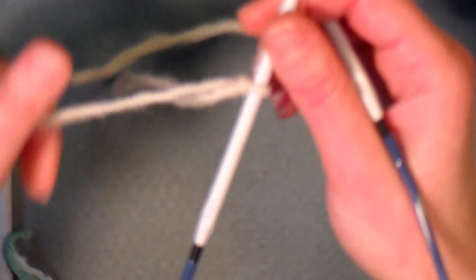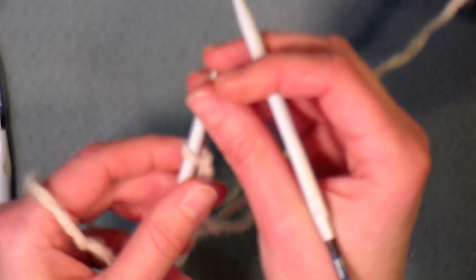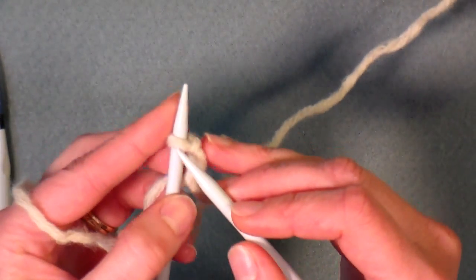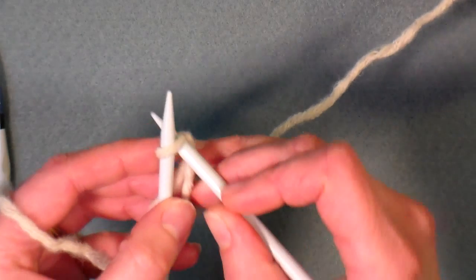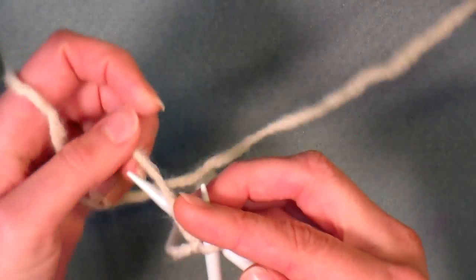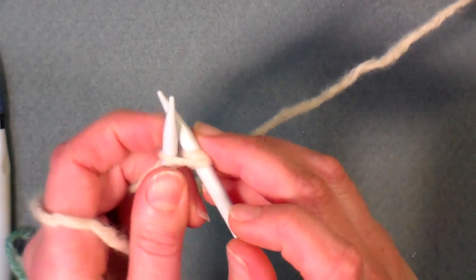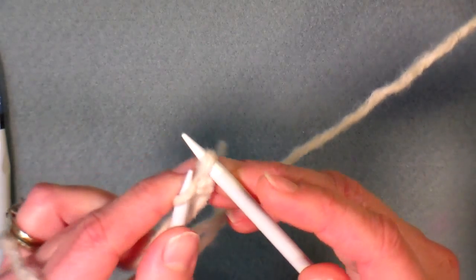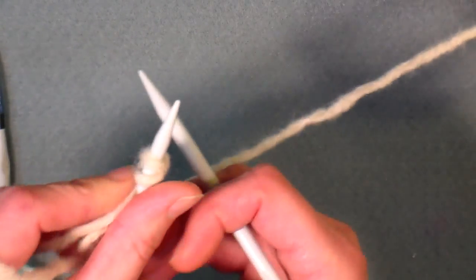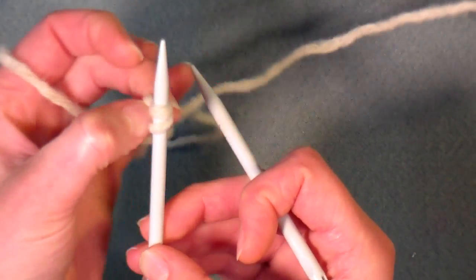Okay, now what you're gonna do is if you've ever increased a stitch when you're knitting, it's the same idea, so you're gonna put your needle in that stitch just as if you're gonna knit it, you're gonna wrap and you're gonna pull up a new loop, okay, and then you're gonna slip that onto your needle so you have two stitches there.